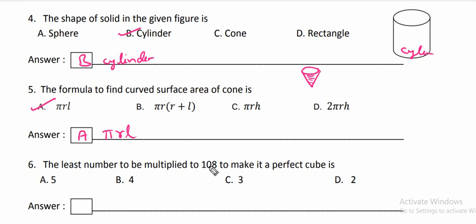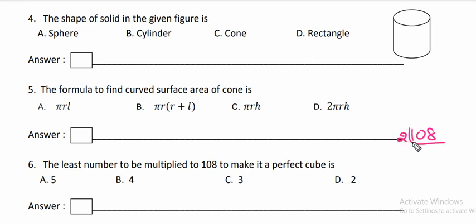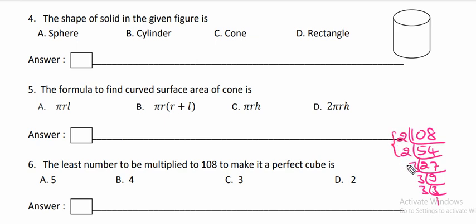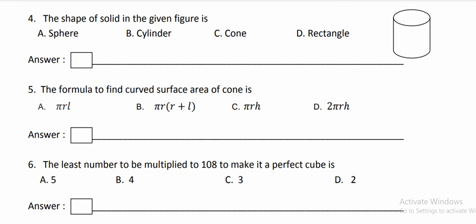The least number to be multiplied to 108 to make a perfect cube. We divide 108: 2 times 2 is 4, 2 times 3 is... continuing the division, 108 gives 2 into 2 only 2 times. For getting a perfect cube number, the same number must be repeated 3 times. Here, 2 comes only 2 times — there is one shortage of 2. Therefore, for getting 108 as the perfect cube, we have to multiply 108 by 2. That is option D.